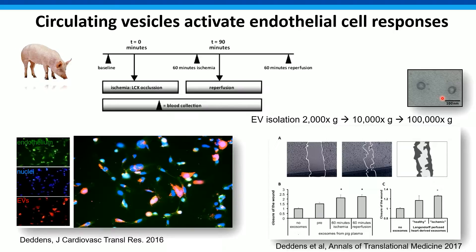We also used the lipid dyes Sean mentioned to stain the vesicles isolated from these preparations. We brought them on endothelial cells — in this case HMEC cells, so human microvascular endothelial cells. By just exposing these vesicle preparations from our porcine animals, we showed that these endothelial cells were taking up these vesicle preps. Of course, could still be contaminations, as Sean was mentioning, so we always have to be careful. If you wait long enough, you will always see these uptakes, to be honest.